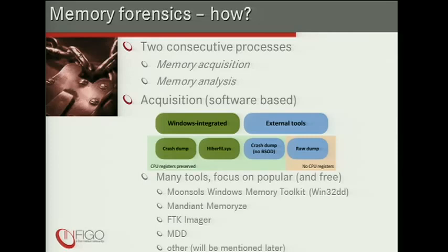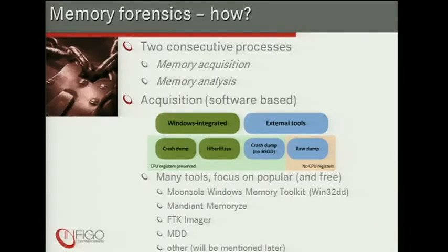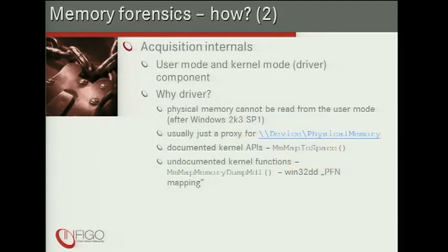Another Windows-integrated mechanism is the crash-dump mechanism, which, if configured correctly, produces a memory dump when an intentional blue screen is triggered — though this requires a reboot. External tools mostly produce a raw dump, which is an exact image of physical memory, while some also support the proprietary Microsoft crash-dump format without causing a reboot. Notable tools include Moons, Win32DD, Memorize, FTK Imager, and WinPMEM.